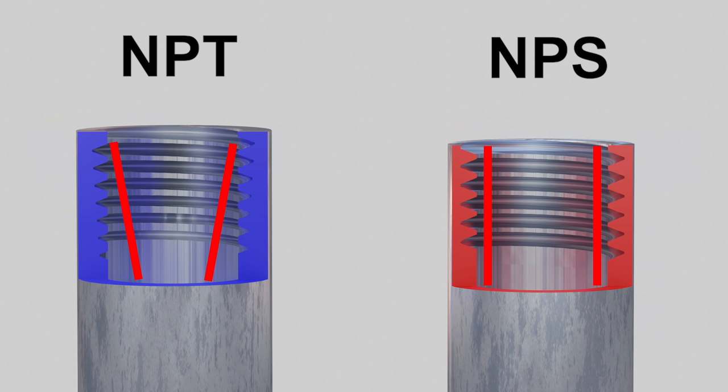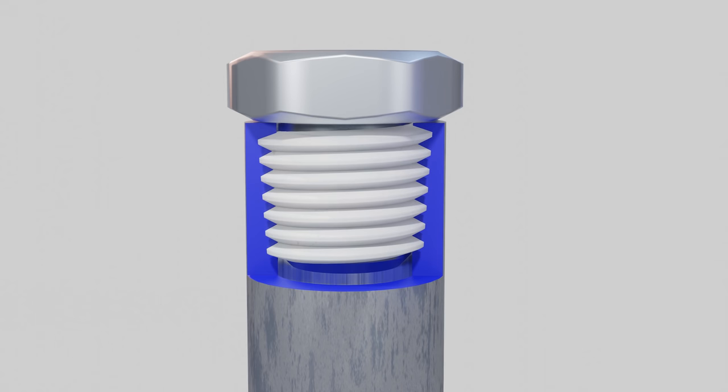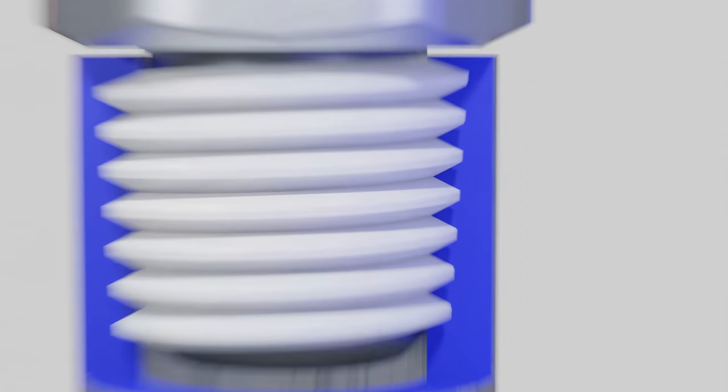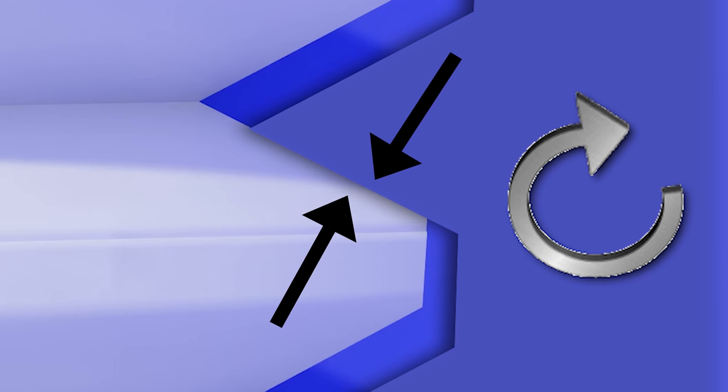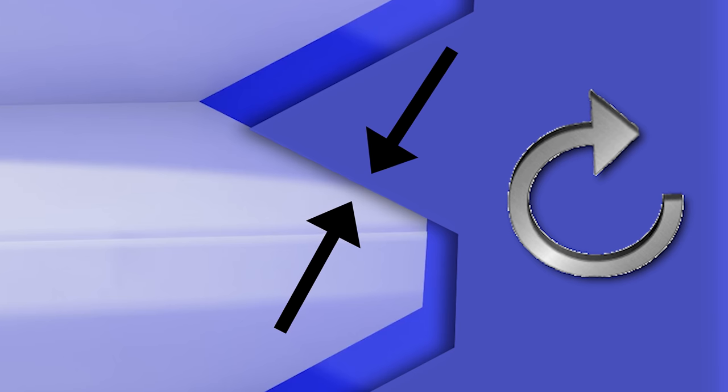The female threads of both respective types are also different. The tapered threads have tapered female threads and the straight threads have straight female threads, but how does all of this relate to how they actually seal? To better understand, let's take a close-up look at the actual threads and what each part is called. This here is the root, this is the crest, and this right here is the flank. If we zoom in on the tapered threads, we can see that they use the actual threads themselves to create a seal, thanks to the flanks on both the pipe and fitting compressing against each other when they're torqued.